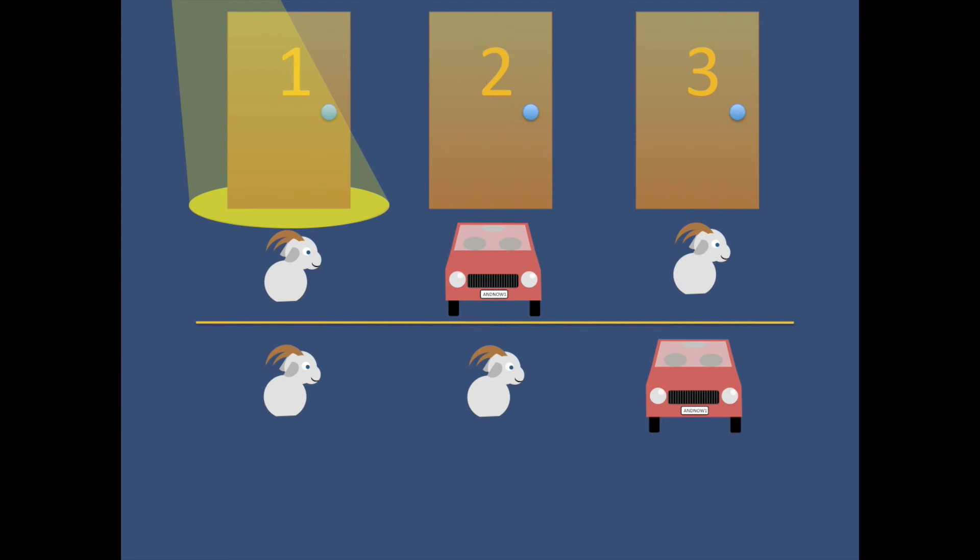The final possibility, because there are no other combinations of cars and goats, is that door number one has the car. The presenter can either open door number two or three, but in either case, switching will not win you the car.